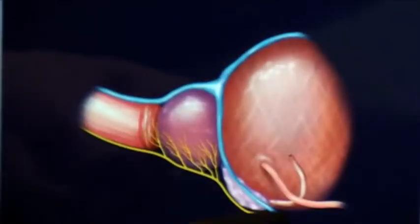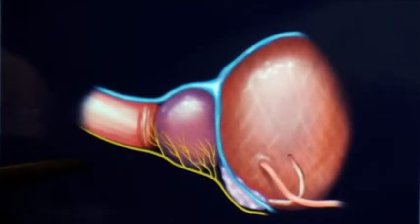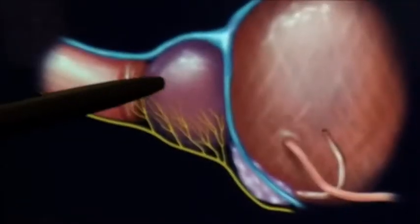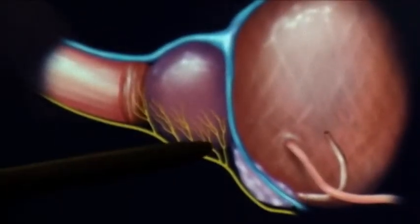Here's the bladder, prostate, the urethra. I'm just going to run through what is removed with the prostatectomy. The prostate is removed as well as the seminal vesicles.